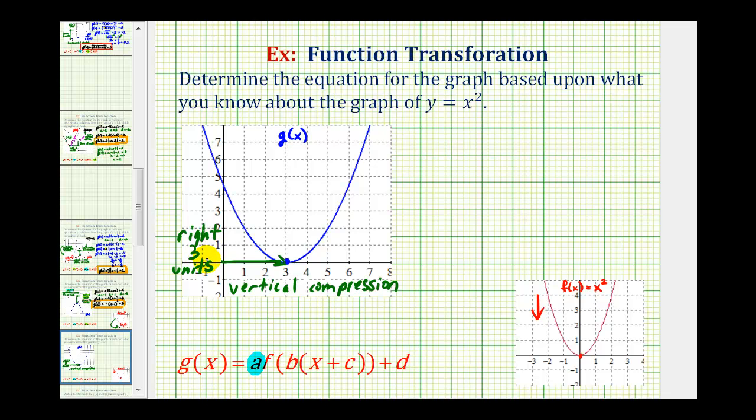Knowing we have a shift right of three units gives us enough information to determine the value of c. These are the only two transformations that we have, which means we can write g of x in terms of f of x as g of x equals a times f of the quantity x plus c. Now that we know this, we'll find the value of c from our graph and then pick a point on the graph, perform substitution, and then solve for a.